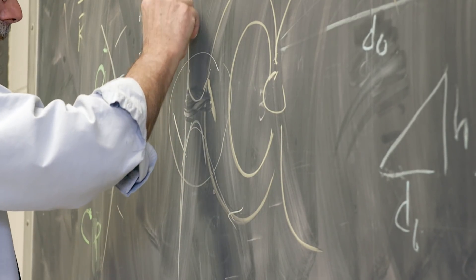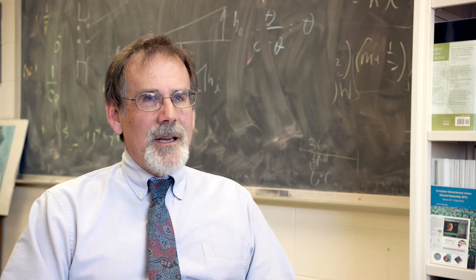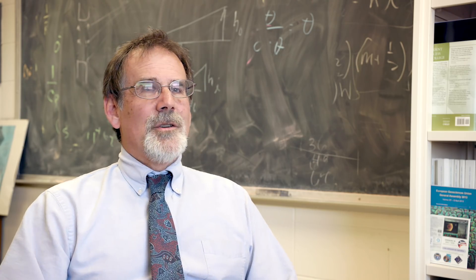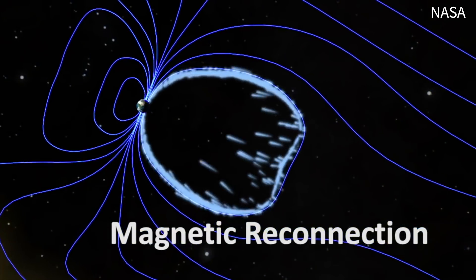Those field lines get dragged away from the Sun, and in that process energy gets introduced into the Earth's magnetosphere. That energy can get transferred to particles, causing things like the radiation belts and the aurora borealis.